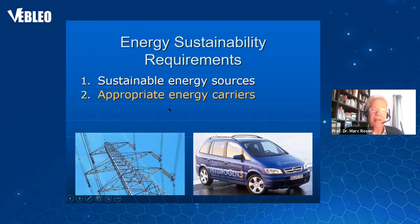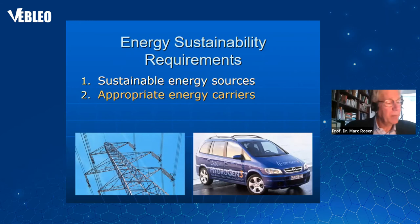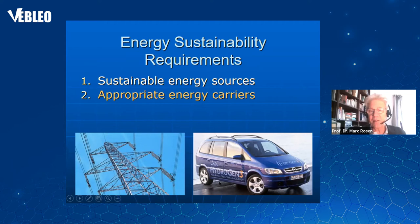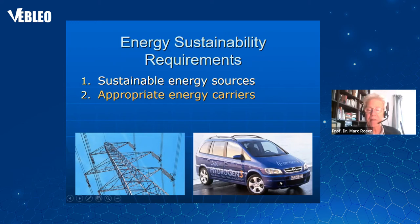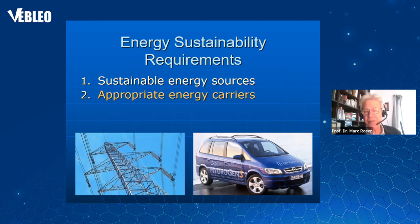The second requirement for energy sustainability is the use of appropriate energy carriers. Electricity is a very common one, but we often need a chemical carrier. Hydrogen — shown here in a hydrogen vehicle — is a carrier that can do that. Hydrogen is effectively a carbon-free hydrocarbon, the extreme opposite of pure carbon, with mixed hydrocarbons like octane, gasoline, coal, and natural gas in between. Hydrogen and electricity together allow us to extract energy from many renewable sources that we couldn't use directly as they exist.